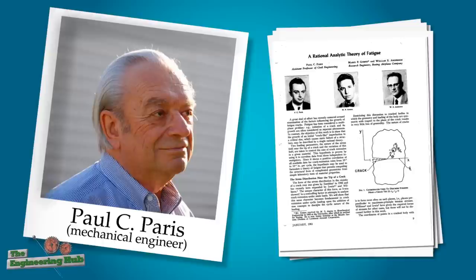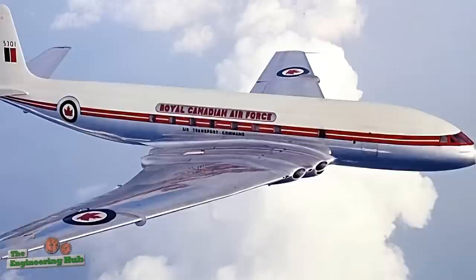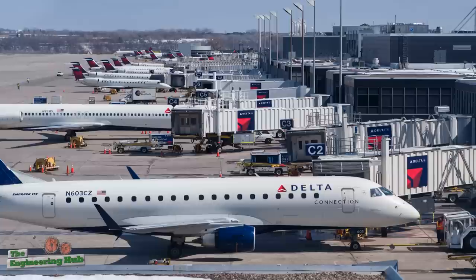For the de Havilland company, these failures caused a big setback. And by the time everything was resolved, the American competitors, like Boeing and Douglas, had caught up to the Comet in terms of innovation and efficiency. In later years, Boeing admitted that the lessons learned from the Comet helped them produce a safer plane and avoid the same pitfalls.